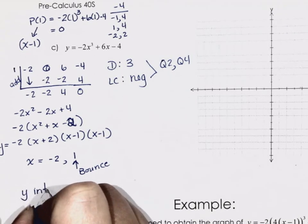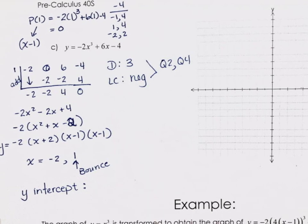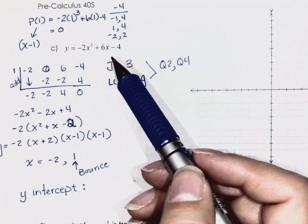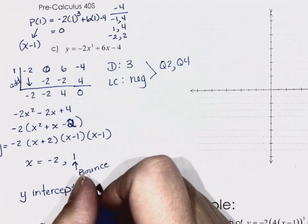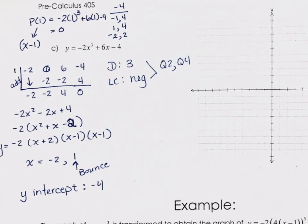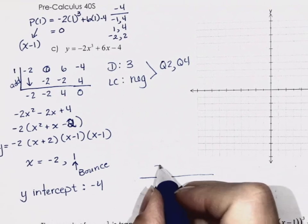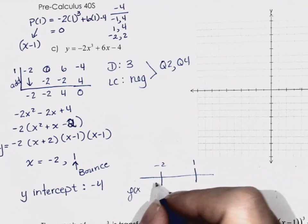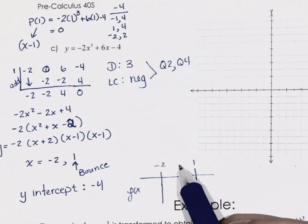We had to do some work for the x-intercepts, but you get a lot of information already done for you. Now we just have to do sign analysis and we're golden. I'm going to put my zero in right now just to have it there.